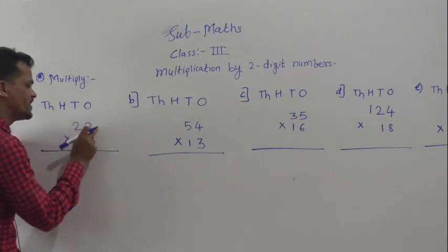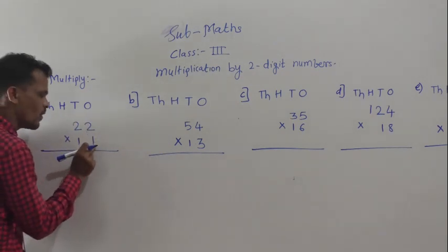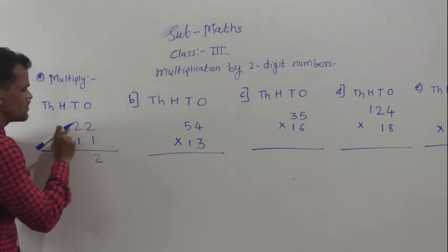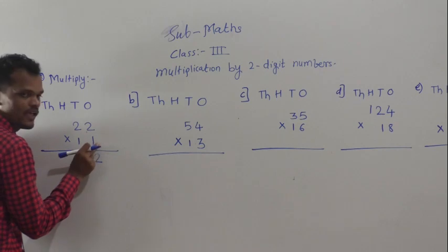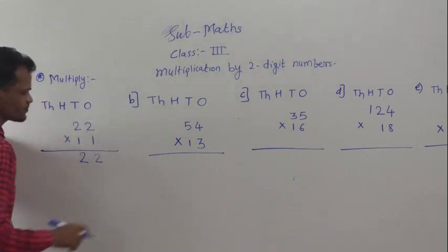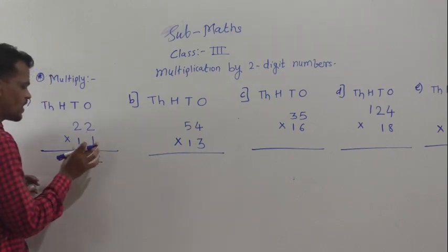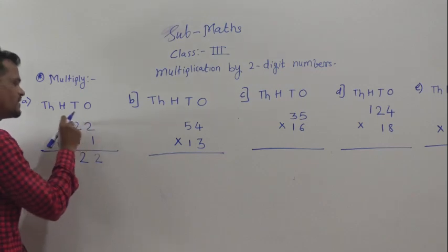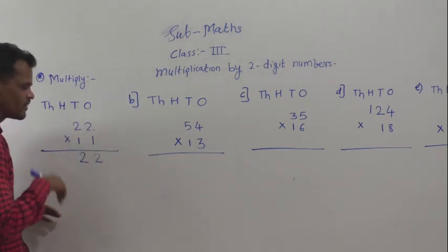First, multiply 22 by 1. So, 1 two is 2, then multiply the tens digit by 1 — 1 two is 2. So you get 22 as the answer when you multiply 22 by 1.